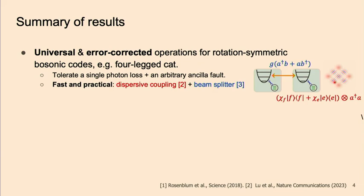These schemes are practical and fast. In terms of physical operations, we use this architecture where we use the simple dispersive coupling between an oscillator and the qubit. In addition, we will use beam-splitter interaction to do two-qubit logic gates. As shown in previous talks, all these physical interactions have been experimentally demonstrated with very high strengths and high quality.